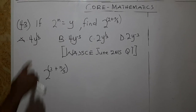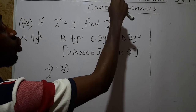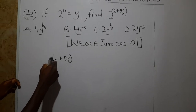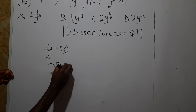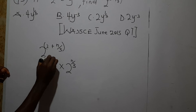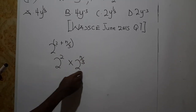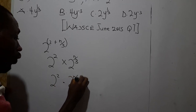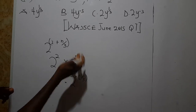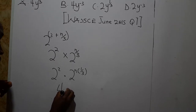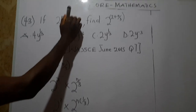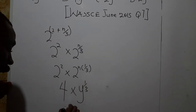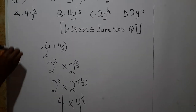WASSCE June 2015, objective question number 7: if 2^n = y, find 2^(2 + n/3). We rewrite as 2^2 · 2^(n/3) = 4 · (2^n)^(1/3). Since 2^n = y, this becomes 4 · y^(1/3) = 4y^(1/3). The correct answer is E.